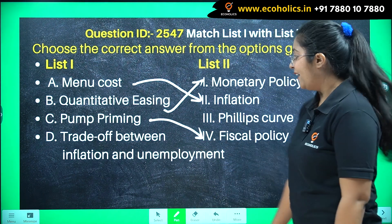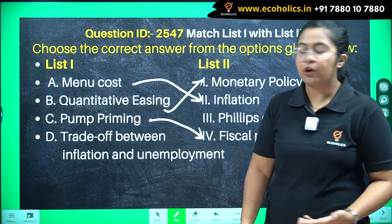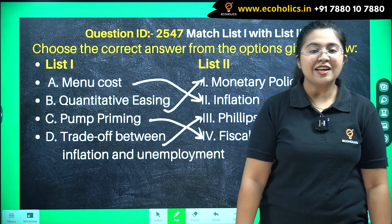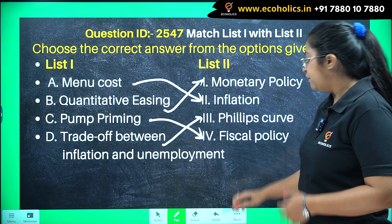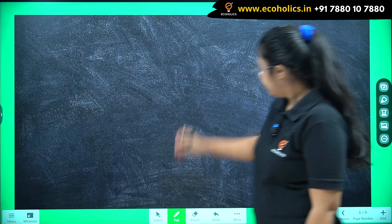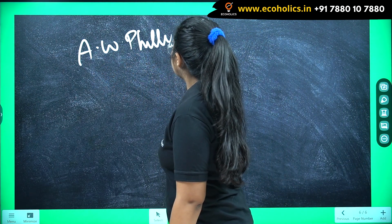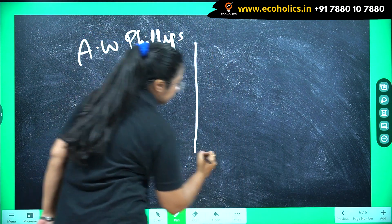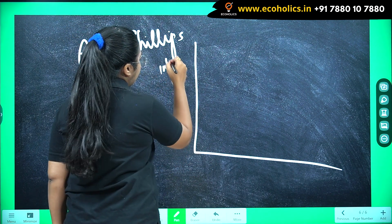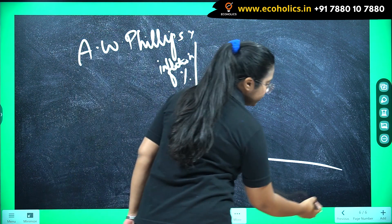Finally, we have the trade-off between inflation and unemployment. The last remaining association is the Phillips curve. A.W. Phillips gave this concept, where he placed the inflation rate on the y-axis and the unemployment rate on the x-axis.